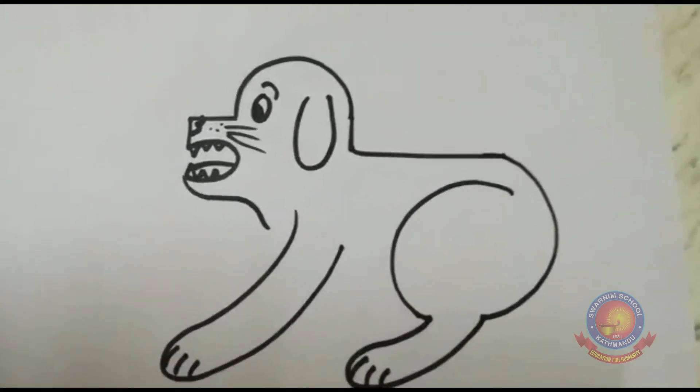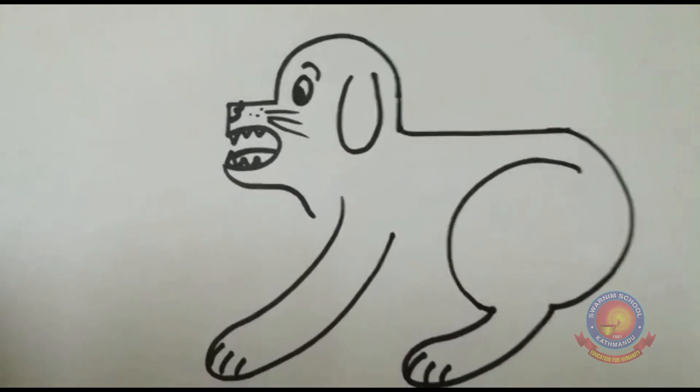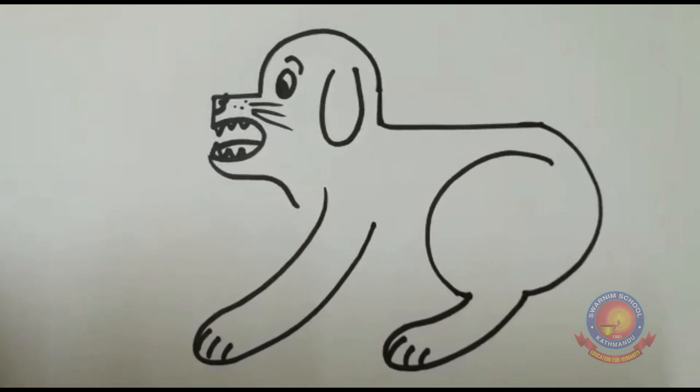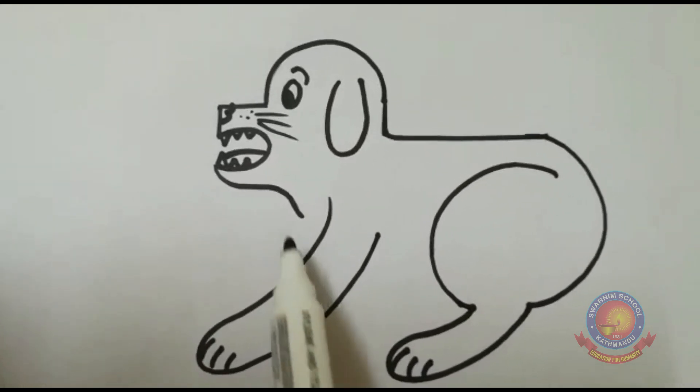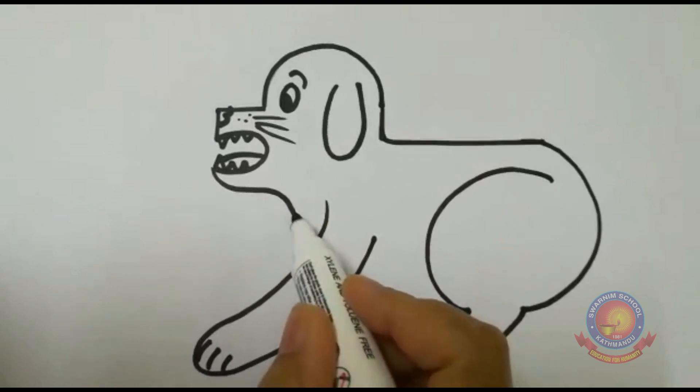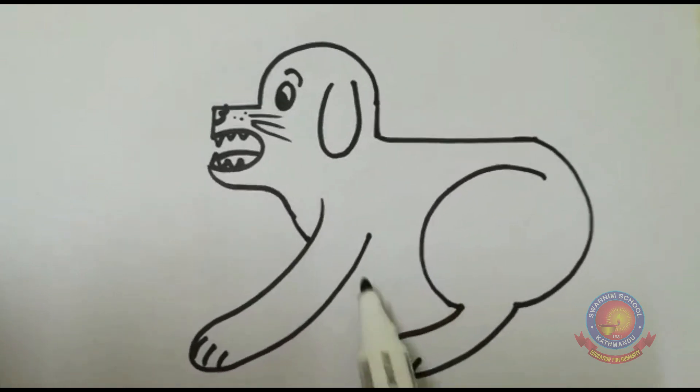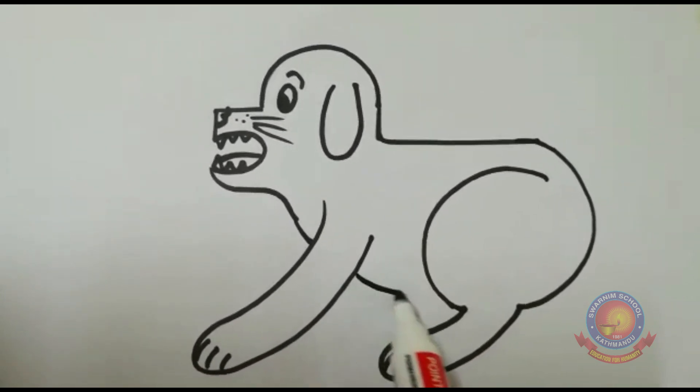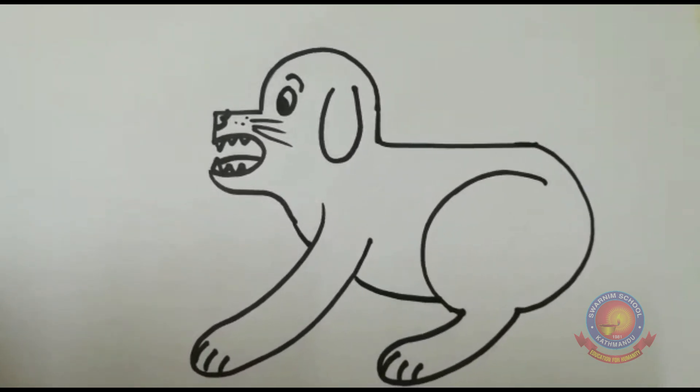Looks like this dog is sitting and really angry. I don't know why this dog is angry. Now after that, from here, this line, let's touch this leg. Touch it. And this area also, let's join it to make a stomach. Dog. Like this.